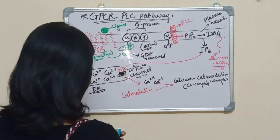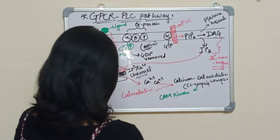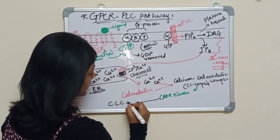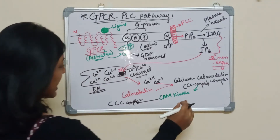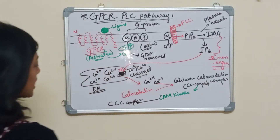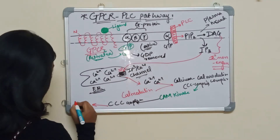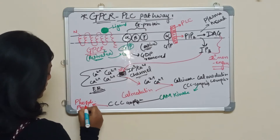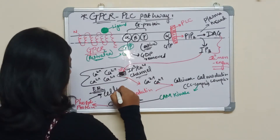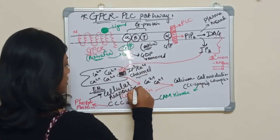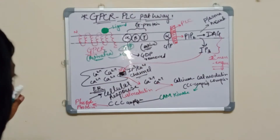This CC complex combines with cam kinase to form the CCC complex — three C's because of calcium, calmodulin, and cam kinase. As it is a kinase, its activity is to phosphorylate another protein. So the CCC complex will phosphorylate a protein, activating it, and it will show a cellular response.